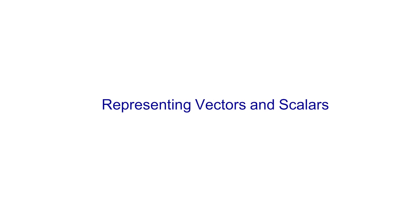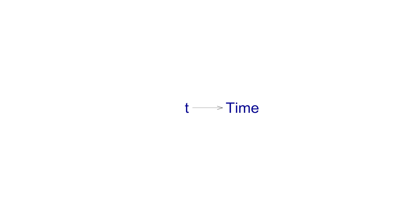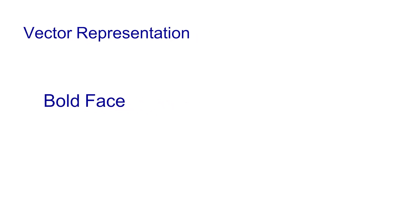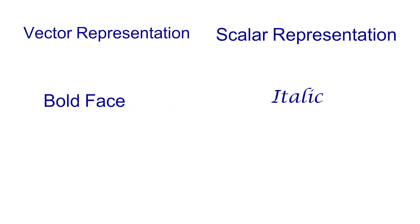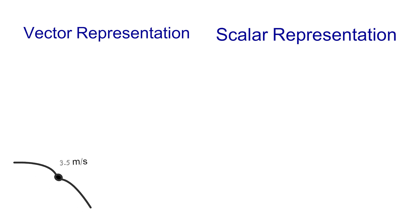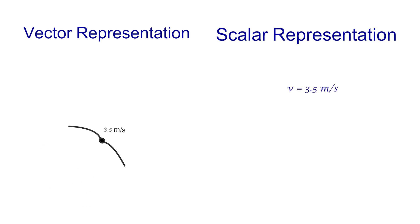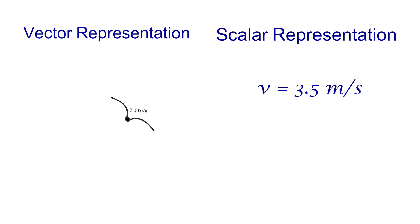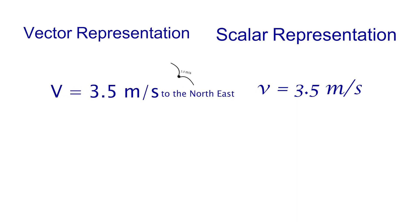Representing vectors and scalars. In physics, we represent any physical quantity with a symbol, such as t for time. We differentiate between scalar and vector quantities by writing vector quantities in boldface type, while scalar quantities are written in italic. For example, to represent a bird flying at 3.5 meters per second to the northeast: the speed (scalar) is written as v = 3.5 m/s, while the velocity (vector) is written as v = 3.5 meters per second to the northeast.